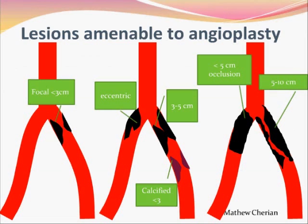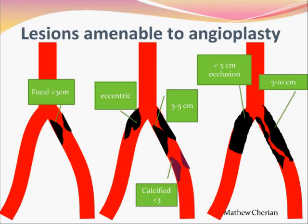In diagrammatic form: Category 1 is a focal concentric, non-calcific stenosis less than 3 cm — easy lesions with excellent long-term results for angioplasty and stenting. Category 2 includes eccentric stenosis less than 3 cm, calcific stenosis less than 3 cm, or concentric stenosis of 3 to 5 cm. Category 3 is an occlusion less than 5 cm or a stenosis of 5 to 10 cm. Occlusions approaching 10 cm or extensive aorto-iliac lesions are not ideal candidates for endovascular therapy.